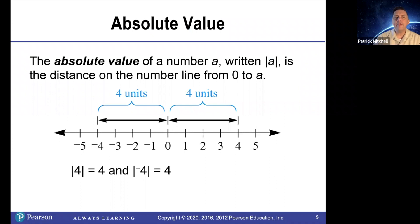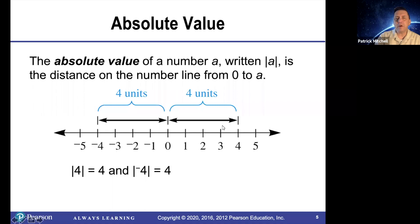The absolute value of a number A, written with straight line brackets, is the distance on the number line from 0 to A. So in this example, we're looking at the distance from 0 to 4, which would be the absolute value of 4, and the distance between 0 and negative 4,